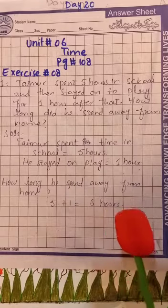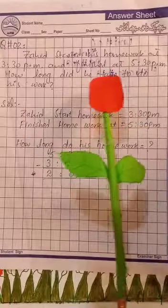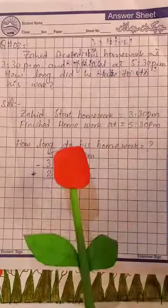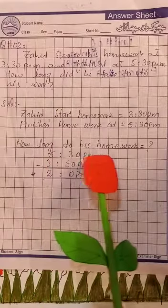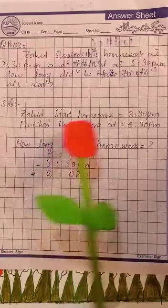and then stayed on to play for one hour after that. How long did he spend away from home? Tamur spent time in school five hours, he stayed on play one hour. How long he spent away from home? So we plus five plus one is equal to six hours. Total time is six hours.